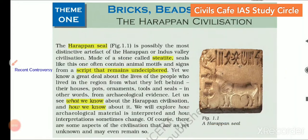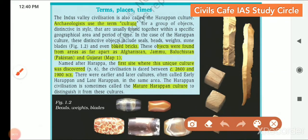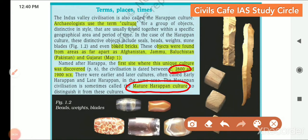We are yet to decipher the Harappan script. This chapter talks about what we know and how we know about the Harappan civilization. The chapter also discusses the timeline: there are three stages — early Harappan, mature Harappan, and late Harappan. The mature Harappan stage is when the culture actually flourished, with the time period being 2600 BC to 1900 BC — a span of 700 years.